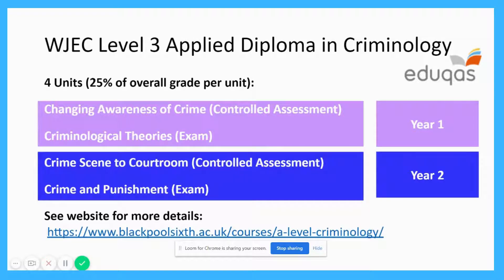In May of the first year you will sit a Criminological Theories exam, which overlaps quite well with the content in Sociology. In the second year you'll do another Controlled Assessment unit called Crime Scene to Courtroom, which is a more in-depth look at the criminal justice system. You'll also do an exam on Crime and Punishment at the end of your second year, which overlaps a little more closely with law. You can check our website for more details on the unit content.